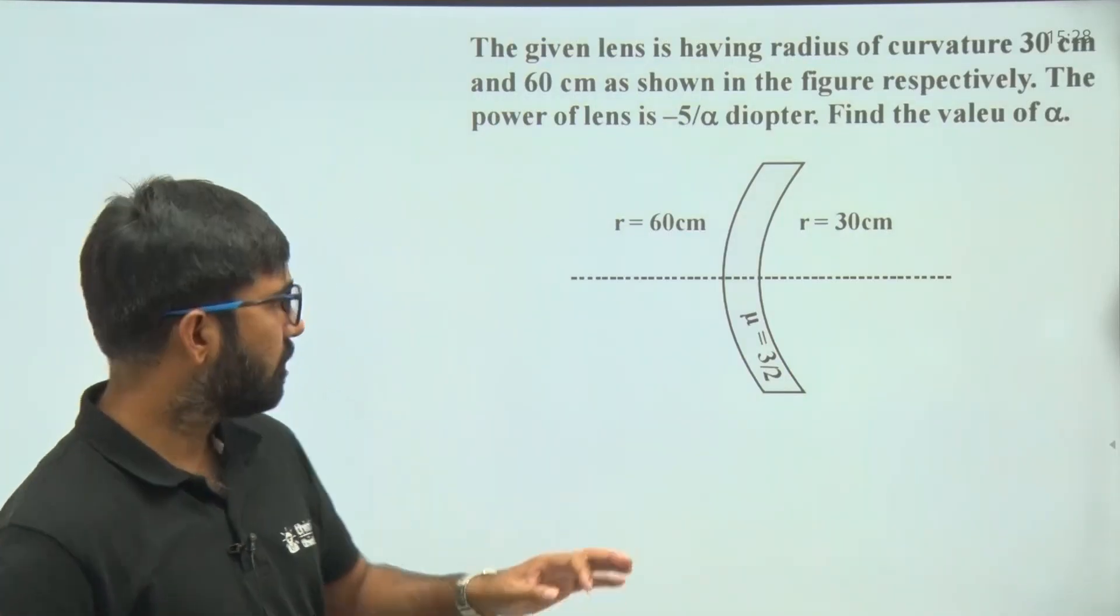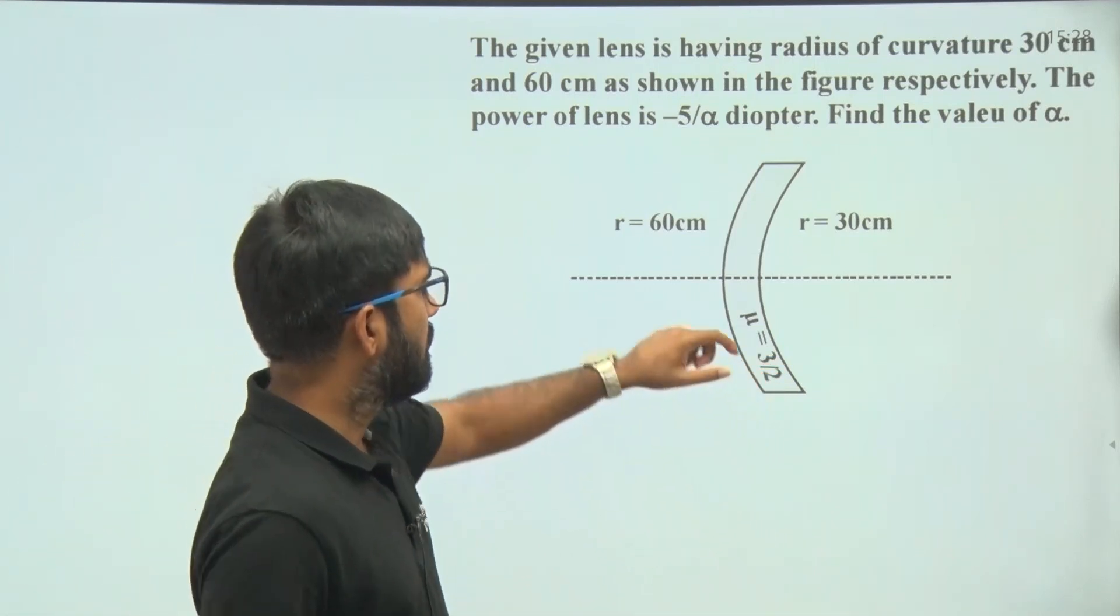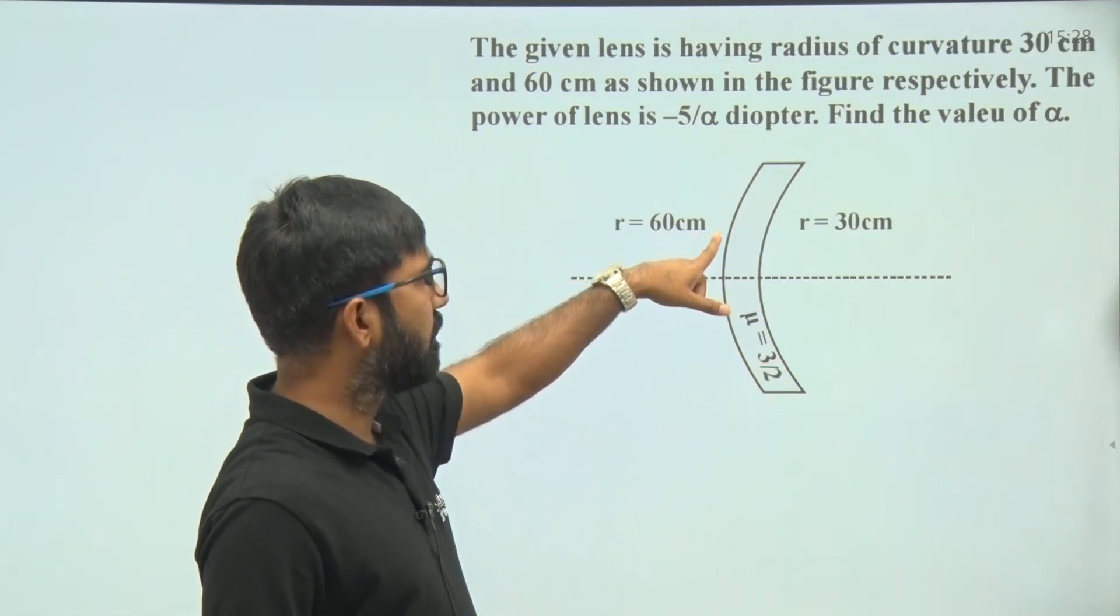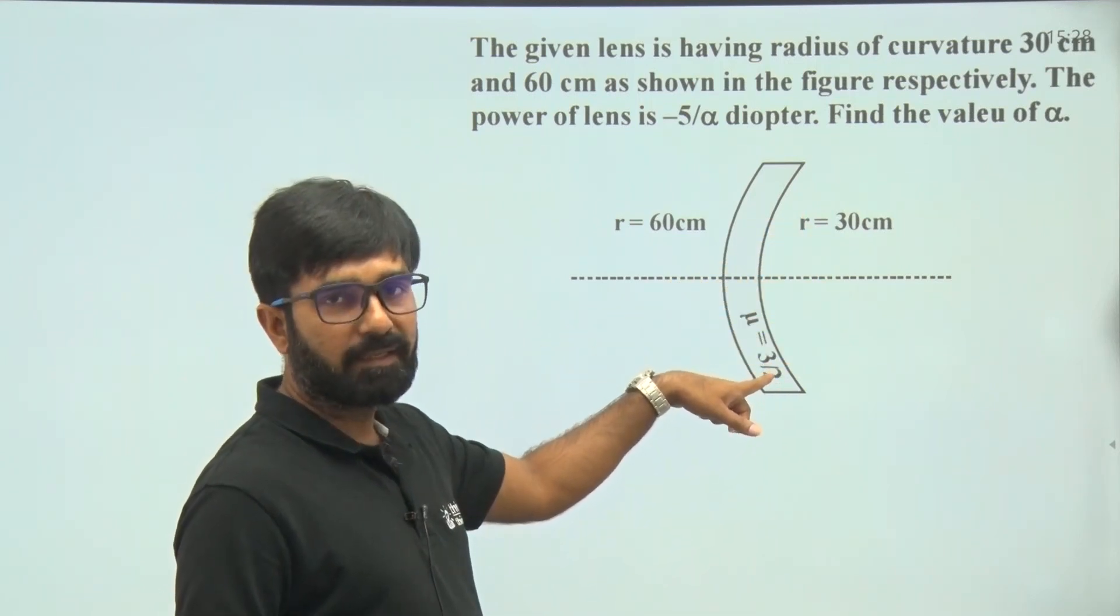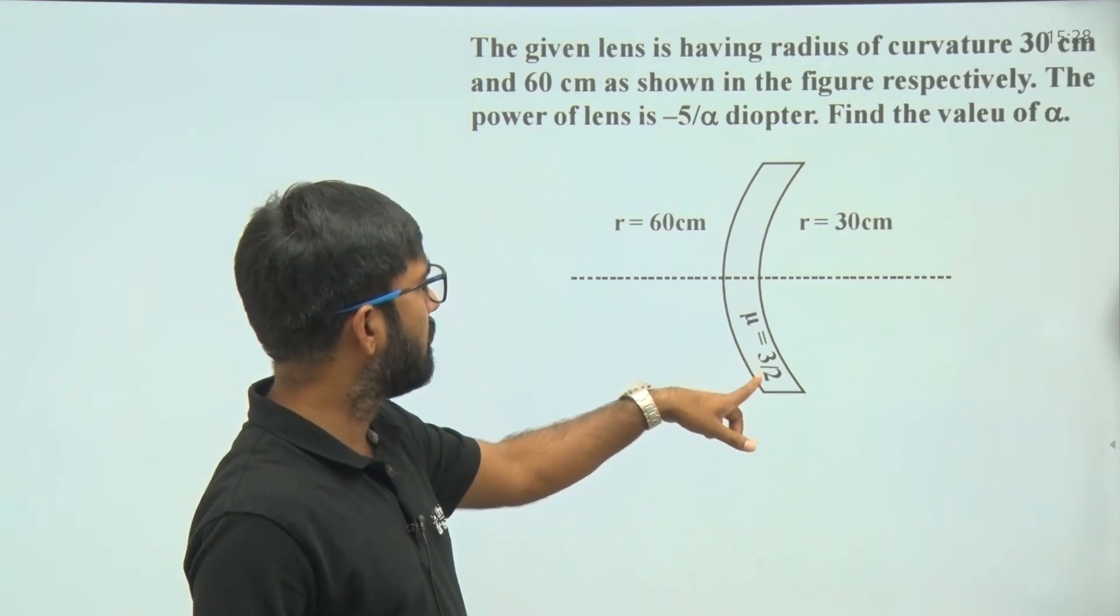My dear students, in this question there is a lens. The radius of curvature of this side is 60 centimeters, radius of curvature of this side is 30 centimeters, and the refractive index of material of lens is mu equal to 3 by 2.